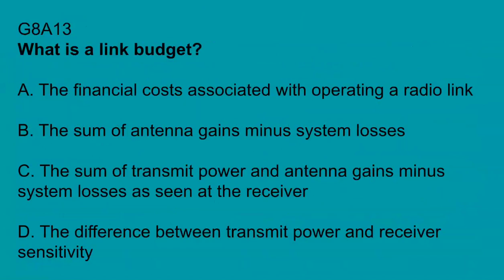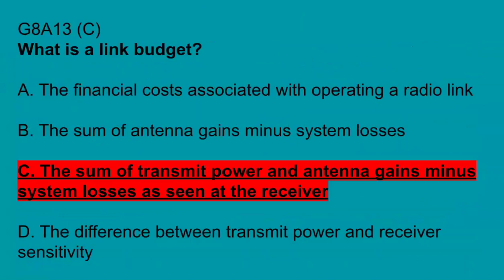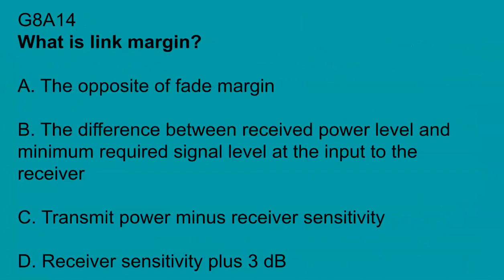G8A13: What is a link budget? The sum of transmit power and antenna gains minus system losses as seen at the receiver. G8A14: What is a link margin? The difference between received power level and the minimum required signal level at the input to the receiver.